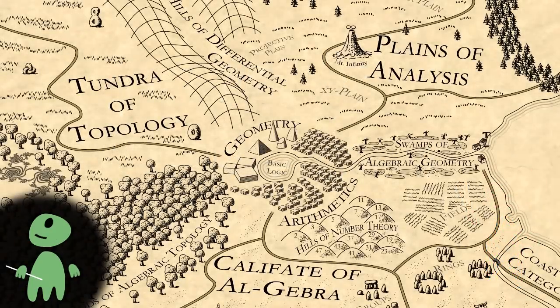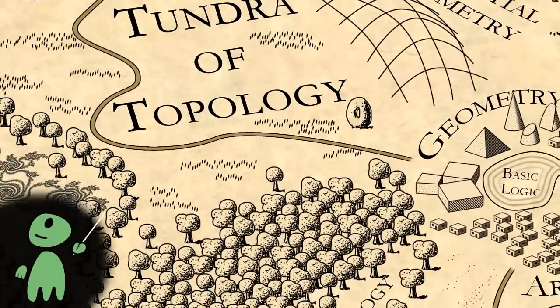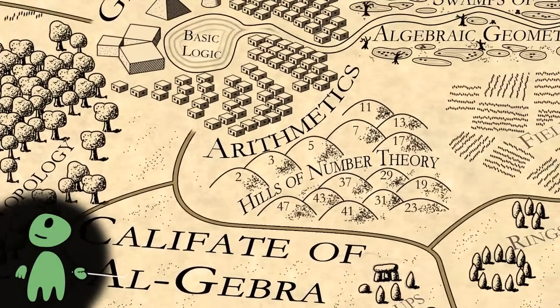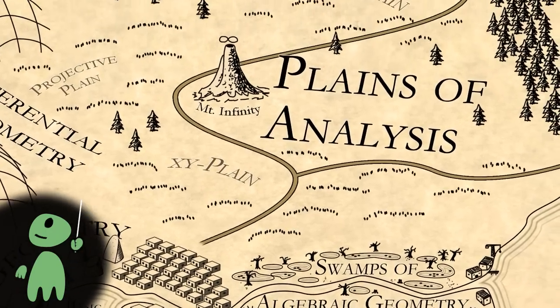Now, we have seen two big regions of mathematics, topology, which is basically geometry minus measuring, and algebra, which is arithmetic minus numbers. A third big field of mathematics takes the numbers from arithmetic and uses them to measure geometry. This is called analysis.